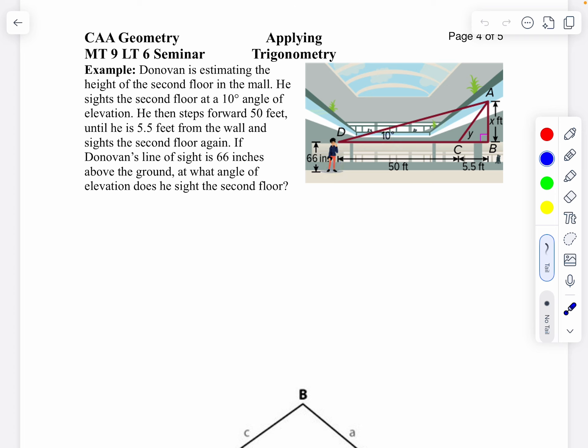forward 50 feet, so he's going to walk forward 50 feet until he's 5.5 feet away from the wall, and he sights the second floor again. His line of sight is 66 inches above the ground. At what angle of elevation does he sight the second floor now?